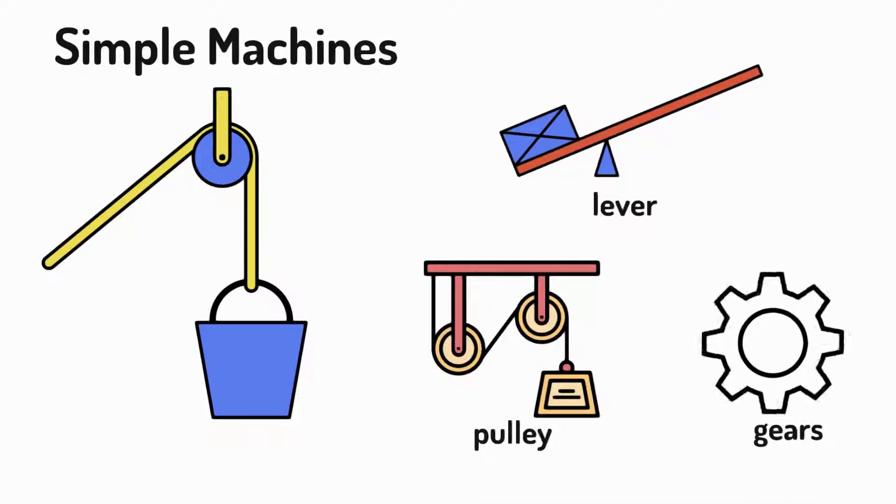Simple machines like levers, pulleys and gears make it easier to lift or move heavy things using less muscle effort.